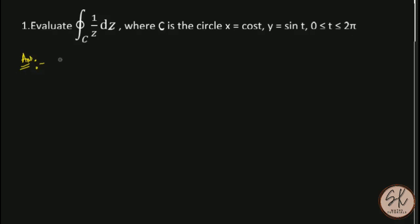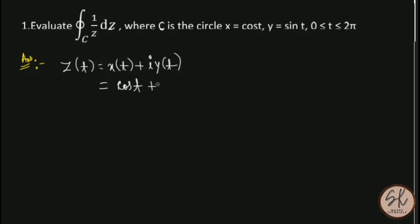We know that z(t) = x(t) + iy(t). Here x(t) = cos(t) and y(t) = sin(t), so z(t) = cos(t) + i·sin(t). Now this equals e^(it) by Euler's formula.